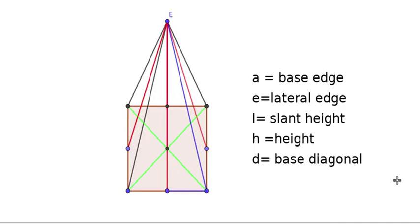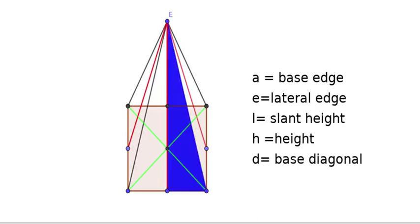From this square pyramid you can find some right triangles. This is one right triangle. Its sides are: half of the base edge (A/2), slant height (L), and the hypotenuse is the lateral edge (E).